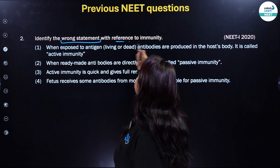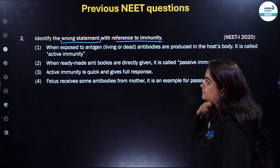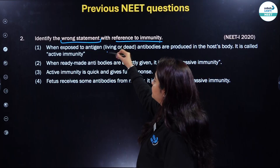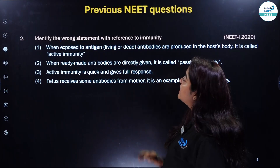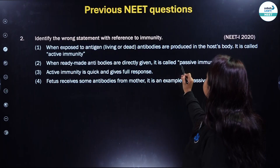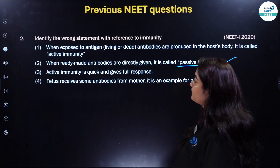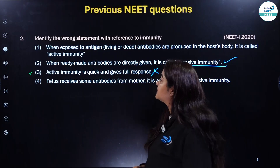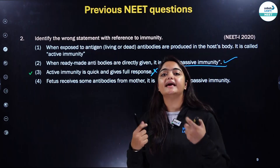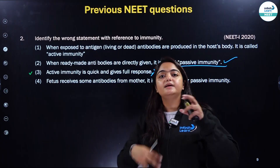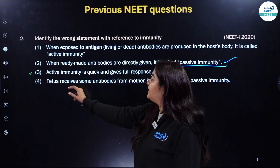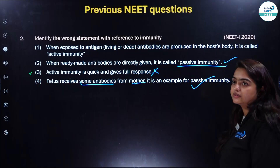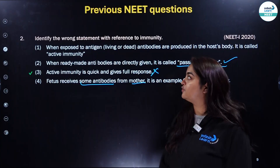Next, identify the wrong statement with reference to immunity. When exposed to antigen, living or dead, antibodies are produced in the host body — this is called active immunity, and it is correct. When ready-made antibodies are directly given, it is called passive immunity — also correct. Active immunity is quick and gives full response — this is NOT correct, because active immunity takes a lot of time since the antibodies are being prepared on their own. Fetus receives some antibodies from the mother — an example of passive immunity — also correct. So only the third statement is the wrong statement.